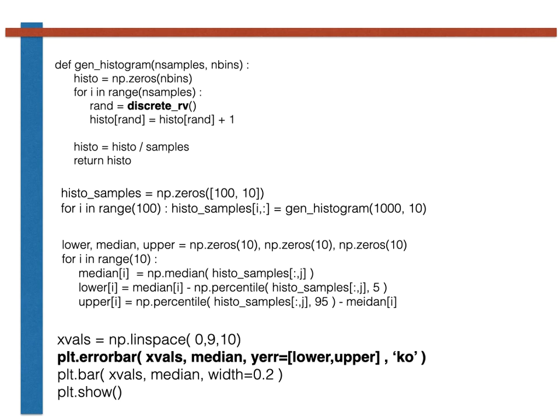This command draws dots at the pairs of values in x_vals and median. Vertical lines are then drawn from median minus lower up to median plus upper.